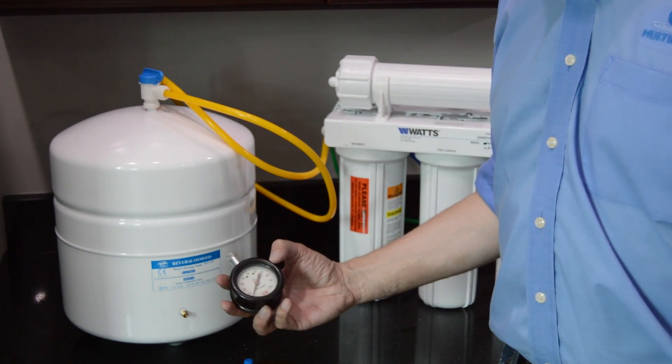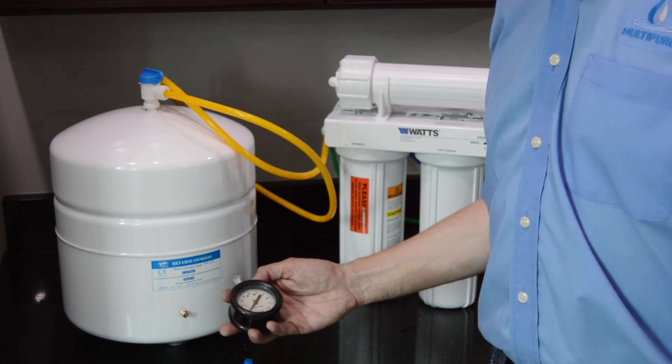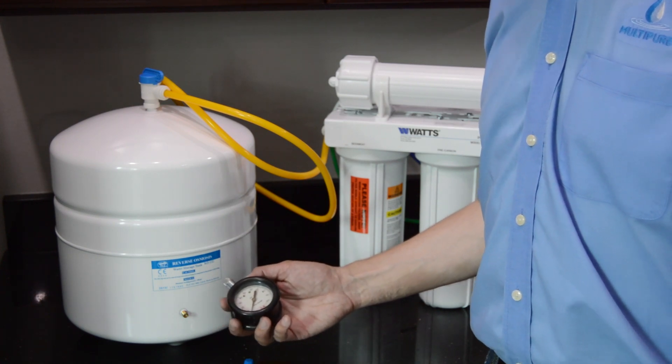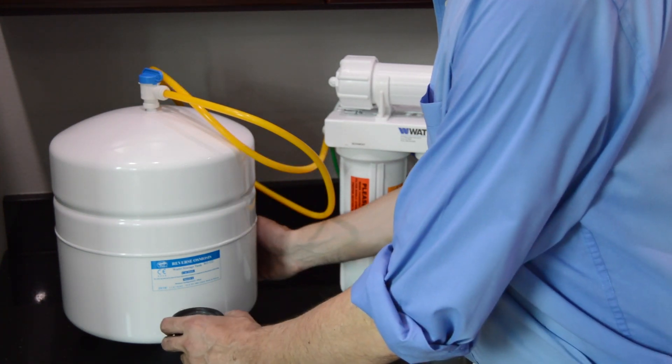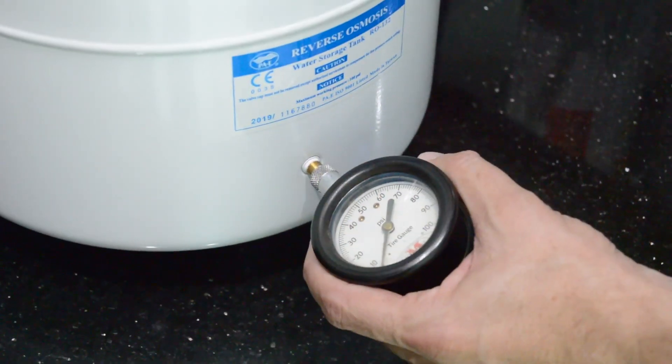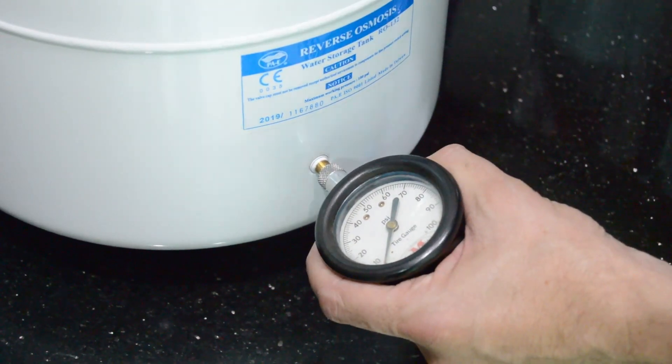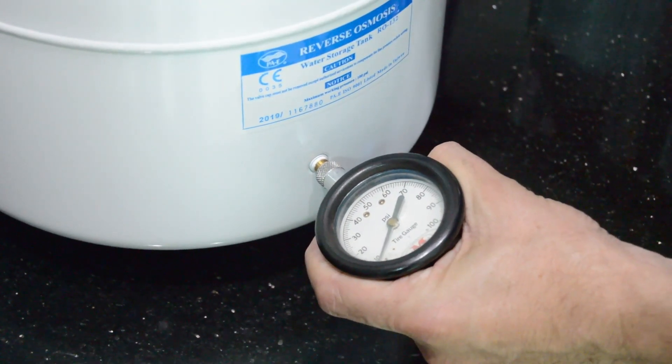Use a pressure gauge such as a bicycle or car tire pressure gauge to measure the tank pressure at the valve. An empty tank should have a pressure of 5 to 7 pounds per square inch.